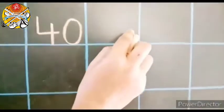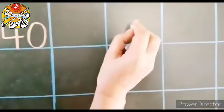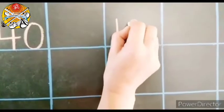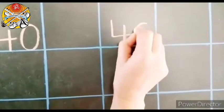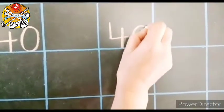Again I will show you. Leave one box and write in the next box. 4, 0, 40.